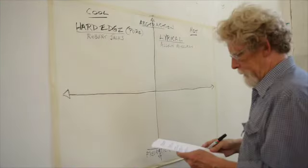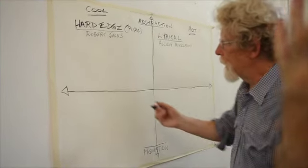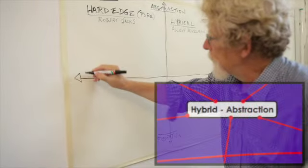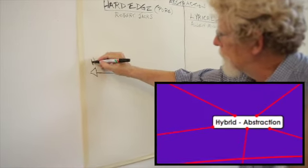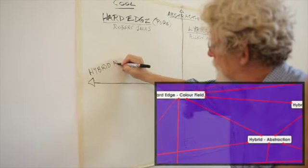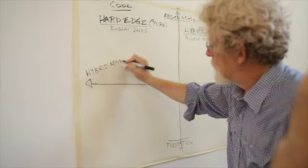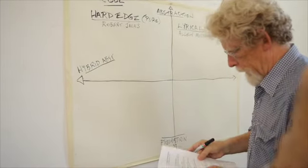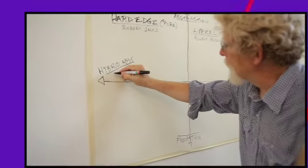Now, I'd also argue there's a kind of hybridised abstraction. I'll put that down here near the equator. And I've put Robert Rooney as a kind of ancestor there.